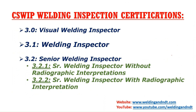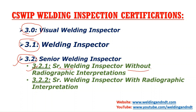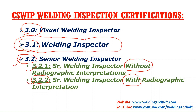CSWIP provides three types of welding certification certificates. The first is 3.0, the visual welding inspector certificate. The second is 3.1, the welding inspector. The third is 3.2, the senior welding inspector, which has two variants: 3.2.1, senior welding inspector without radiographic interpretation, and 3.2.2, senior welding inspector with radiographic interpretation. The most common among these is the 3.1 welding inspector course, which most candidates choose.